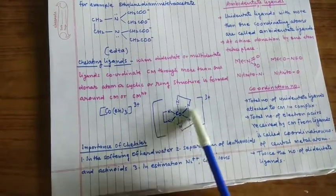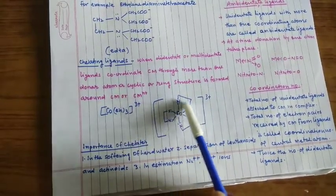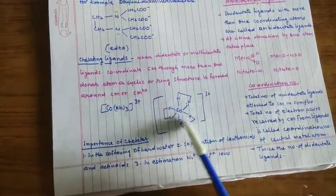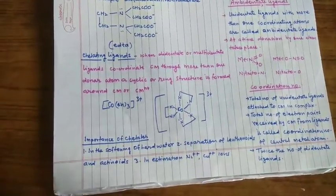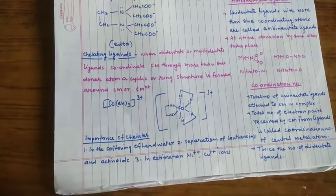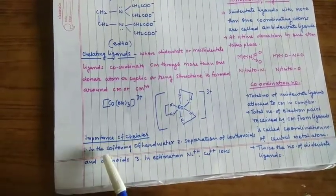So this forms a cyclic structure around Co or central metal atom. इसी को हम chelate ring बोलते हैं। और chelation जब भी होगा, इससे compound की stability बढ़ती है।